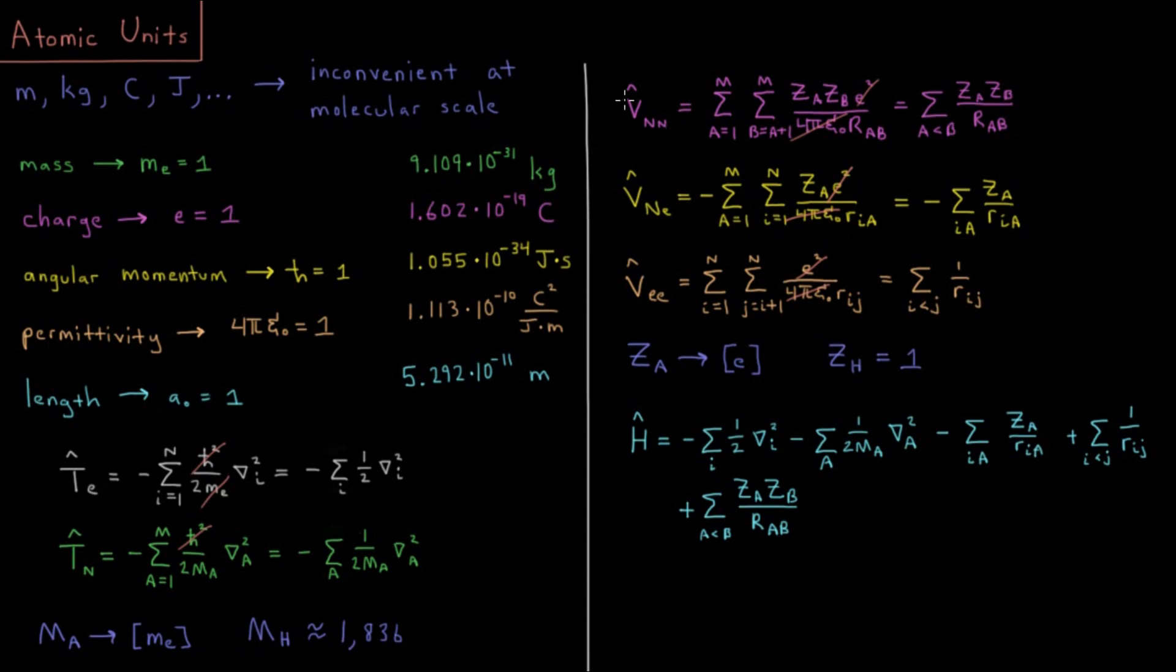Okay, so then we move on to our potential energy terms. We start off with nuclear nuclear repulsion, where we see charge of the electron, e squared, is going to be 1 squared, so that goes away. 4 pi epsilon naught is 1, that goes away. Okay, so we're left with a sum.